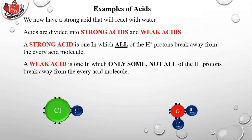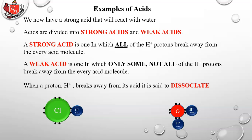A weak acid is one in which only some — not all — of the H+ protons break away from the acid molecule. An example would be vinegar, which is acetic acid: it has a hydrogen which only occasionally in water will break away and move to the water molecule. When a proton H+ breaks away from its acid, it is said to dissociate.